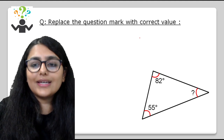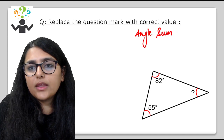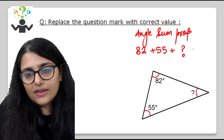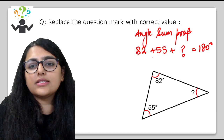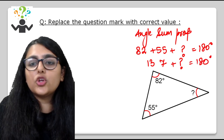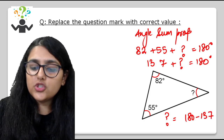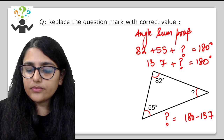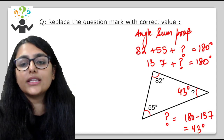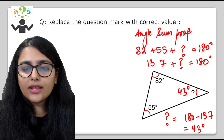Replace the question mark with the correct value using the angle sum property: 82 + 55 + question mark = 180. So 137 + question mark = 180, giving question mark = 43 degrees. You can verify: 43 + 82 + 55 = 180 degrees.